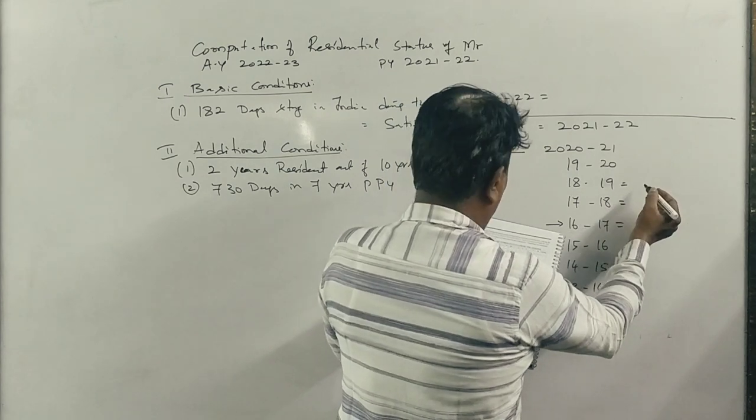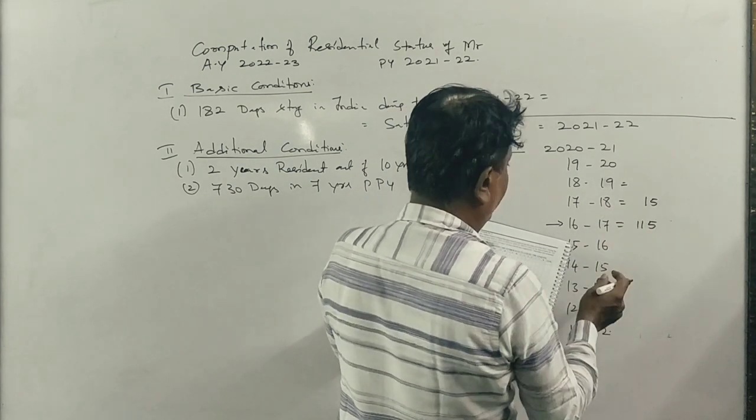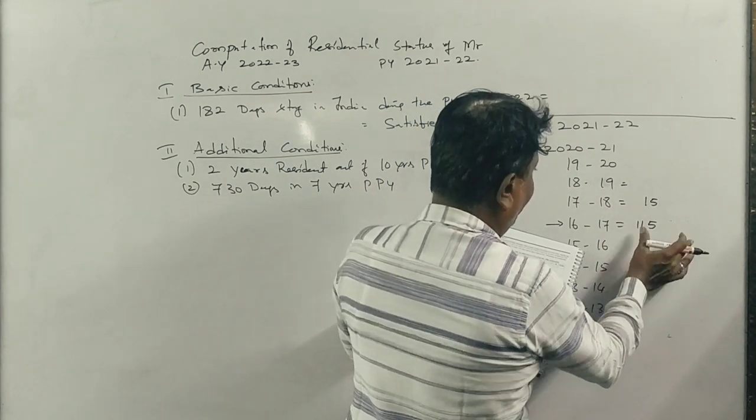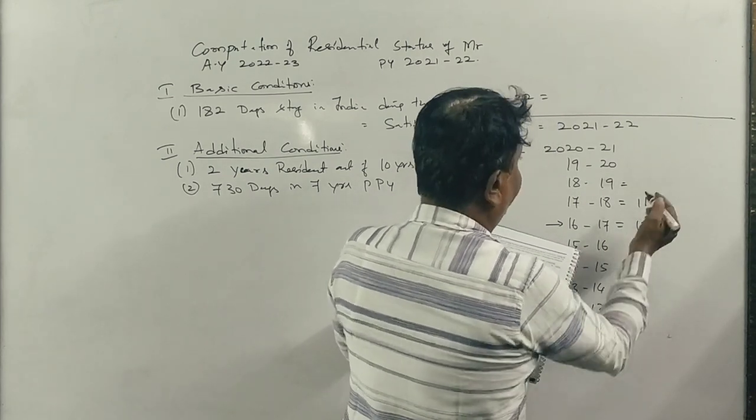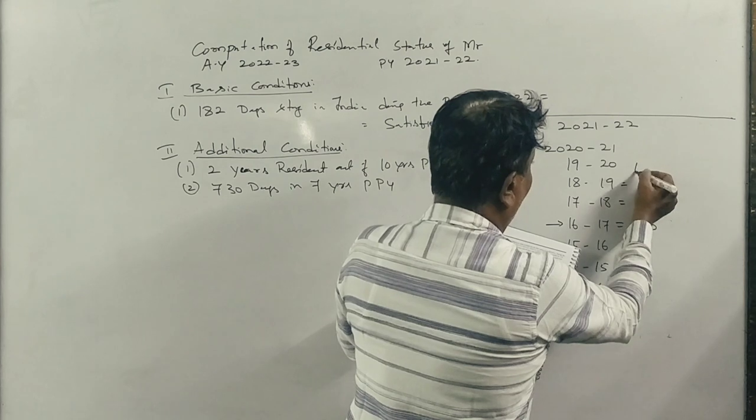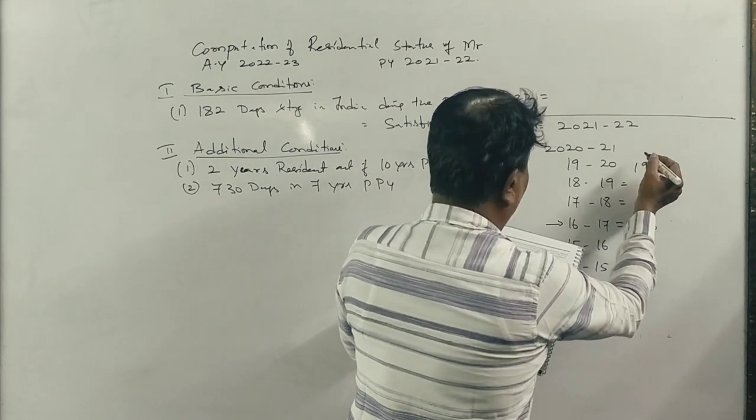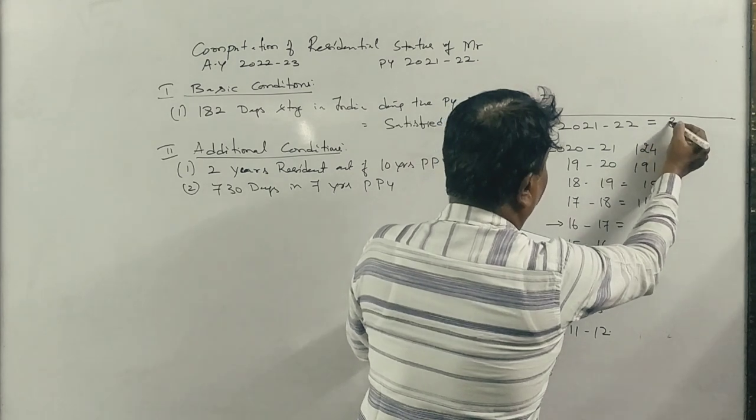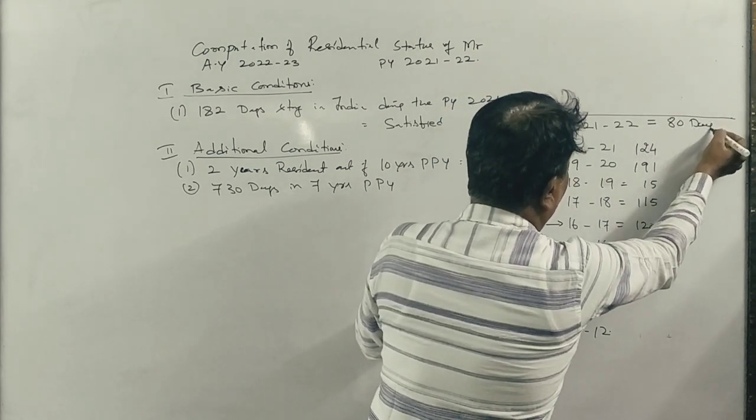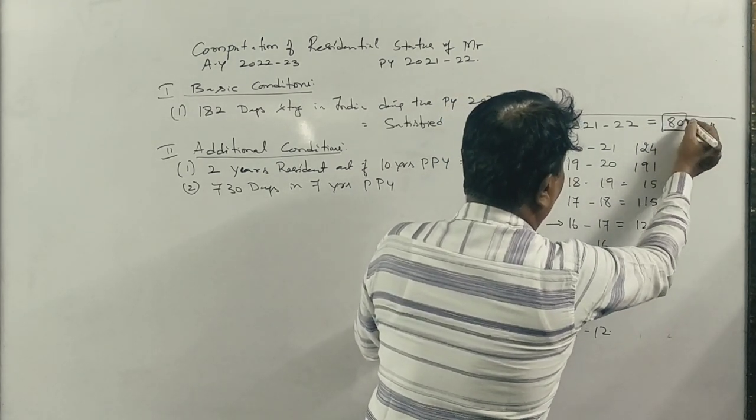18-19, 19-20, 120 days. 120, 115, 15, 191, 124, and in the previous year, how many days he was there? 80 days. This is very important for us.